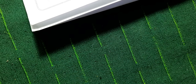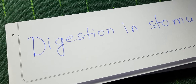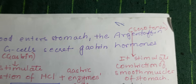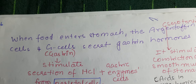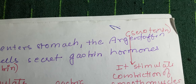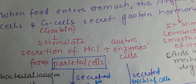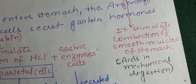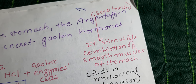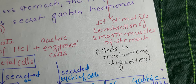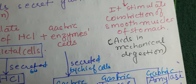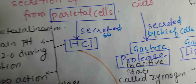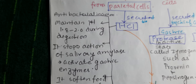When food enters the stomach, the argentaffin cells and G cells secrete gastrin. Gastrin stimulates the secretion of HCl from parietal cells, and gastric enzymes are also secreted. Serotonin secreted by argentaffin cells stimulates contraction of smooth muscles, causing mechanical digestion — the churning of food. Parietal cells produce HCl, which has various functions: it is antibacterial, maintains pH of 1.8 to 2.0, stops the action of salivary amylase, and activates gastric enzymes.